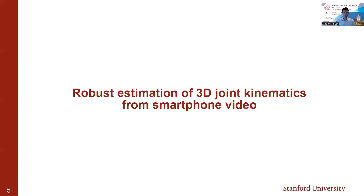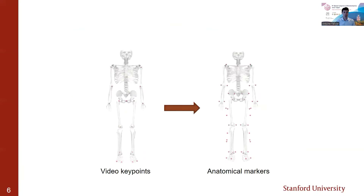This project aims to address these problems and to develop a robust method for estimating 3D joint kinematics from smartphone video. The key ingredient to our approach is that we wanted to use a more comprehensive set of markers, so as to reduce sparsity and increase accuracy and robustness. In particular, instead of using video keypoints, we wanted to use anatomical markers at known positions. However, since anatomical markers are not identified by pose detection algorithms, we needed a way to estimate their position.